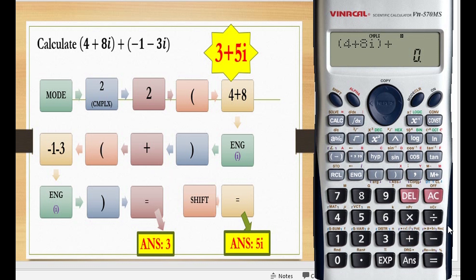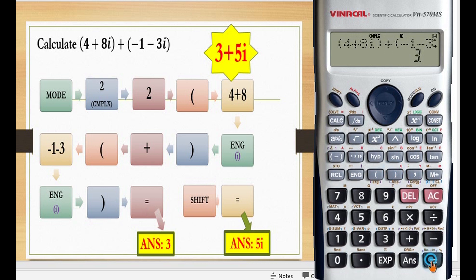Open bracket, then press negative 1 minus 3, then press ENG for i, and close the bracket. Press equal to and you will get 3 for the real part. For the imaginary part, press shift equal to and you will get 5i. Therefore, the final answer is 3 plus 5i.